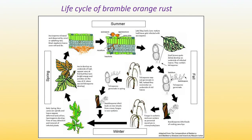At this point, teliospores will either germinate or not germinate. If they germinate, they will continue to produce basidiospores that infect the buds of the fruiting cane, and the fungus becomes systemic. If they don't germinate right away, the fungus overwinters in old leaves, and in spring will germinate to produce basidiospores that infect new shoots from the crown, and then the fungus becomes systemic. That's the whole cycle of the disease.